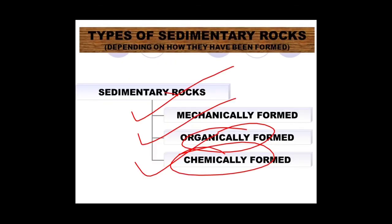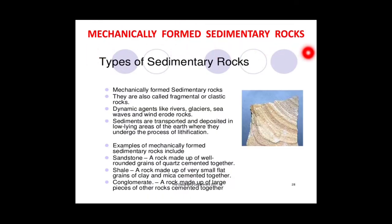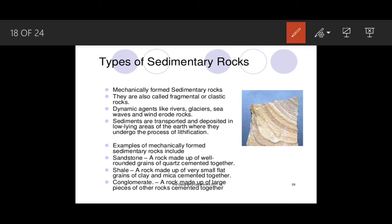Mechanically formed sedimentary rocks are also called fragmental or clastic rocks. They are called clastic because compounds of lime and calcium are involved in cementation and compaction. Dynamic agents like rivers, glaciers, sea waves, and winds erode the rocks. Sediments are then transported and deposited in low-lying areas, where they undergo compaction and cementation — the process of lithification.